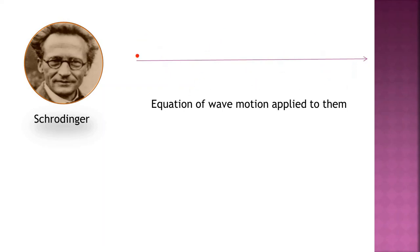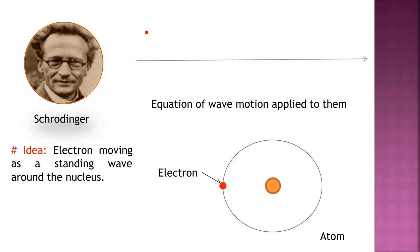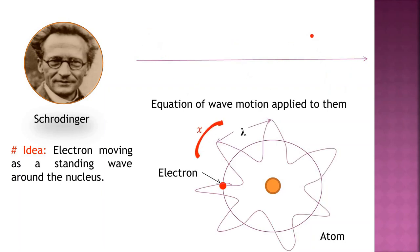Later on, more applications of this equation were found. In this lecture, we are going to derive the Schrödinger Wave Equation in detail. For this derivation, he used the idea that in an atom, the electron is moving around the nucleus as a standing wave. He considered an electron wave of wavelength lambda moving along the x-axis.